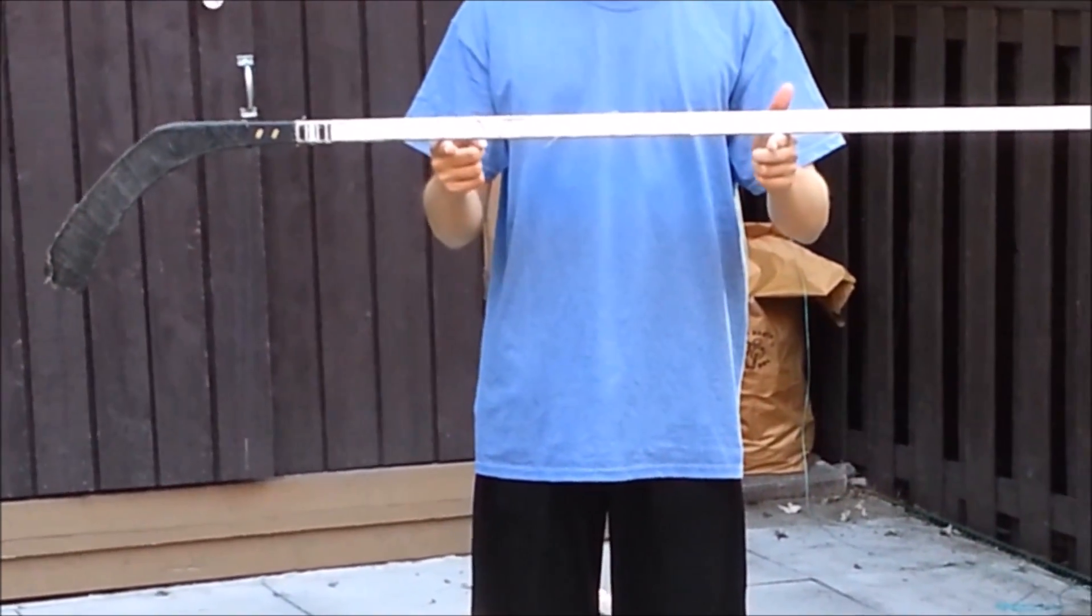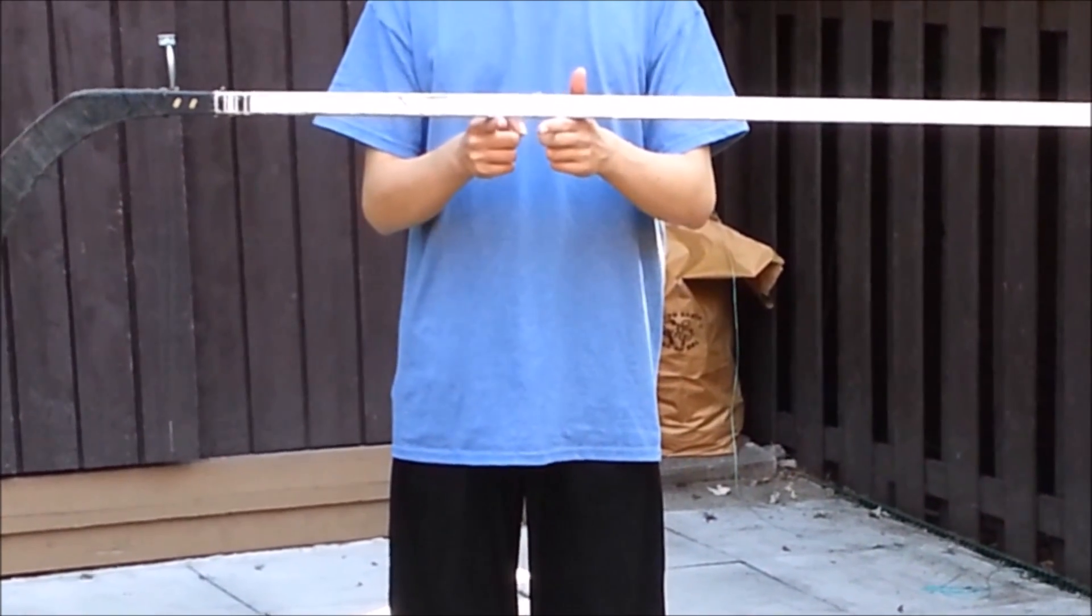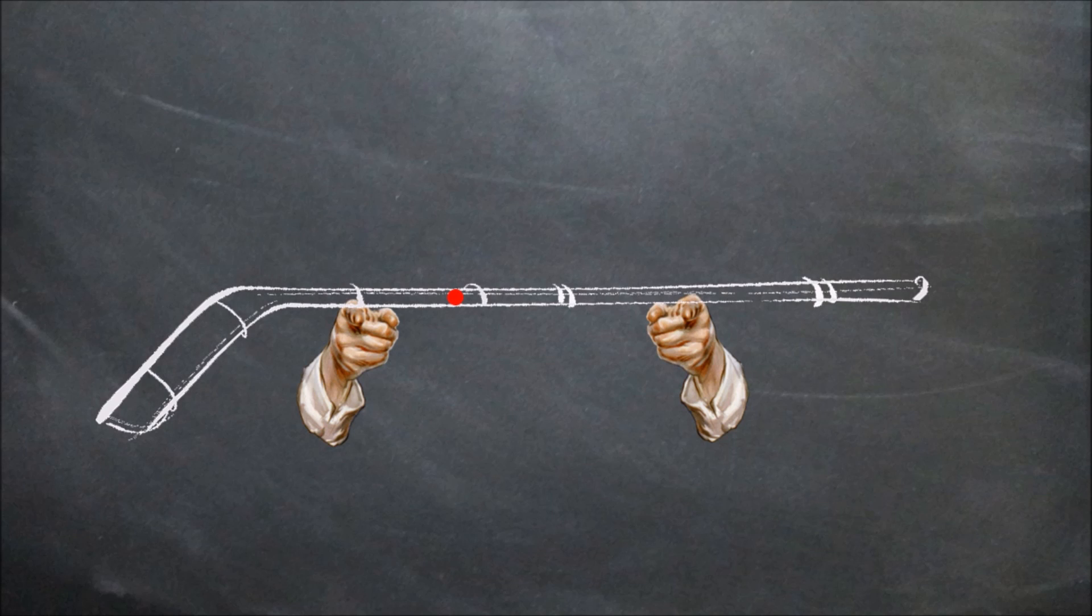When balancing a cane on two fingers and moving them together, your fingers always meet at the center of mass, leaving the stick balanced. When your fingers are apart, statics dictate that the normal force from the finger closer to the center of mass is greater than that of the other, and because the surfaces of the stick and finger are pressing harder on each other here, there is more friction.